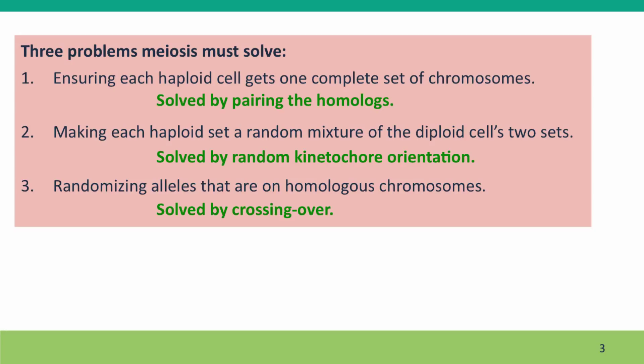The sets that result are a random mixture of chromosomes because when the homologs are paired, the kinetochores are oriented randomly and you can't predict which chromosome is going to get pulled to which pole.